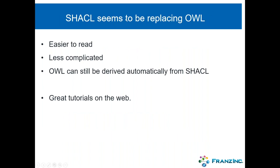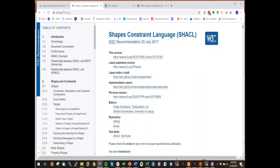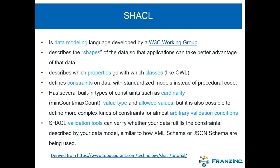We finally implemented SHACL. What we see now in the marketplace is that SHACL seems to be replacing OWL for data definitions — it's way easier to read, less complicated, and it's easy to create OWL from SHACL. Great tutorials exist on the W3C website for the Shape Constraint Language. To explain SHACL simply: it's a data modeling language developed by W3C. It describes the shapes of data, which properties go with which classes, and lets you define constraints on data declaratively instead of writing validation code.